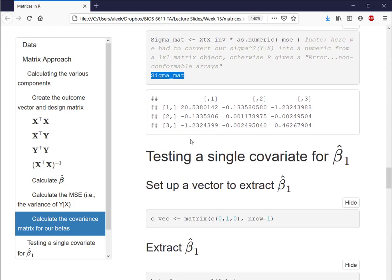So with that, we can move to our second section of this HTML, where we're testing a single covariance for just beta hat 1. The first step here, again, is to set up a vector where we can extract the relevant information. So here we're setting up a row vector where we have beta not equal to 0, beta 1 equal to 1 as its indicator, and beta 2 equal to 0. And we'll just call this CVEC for the purpose of our calculations.